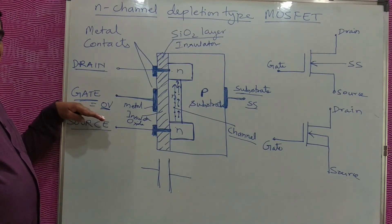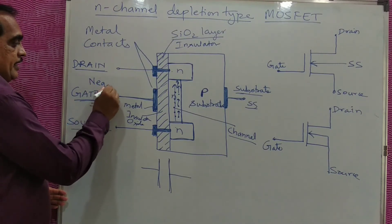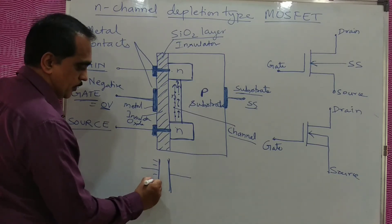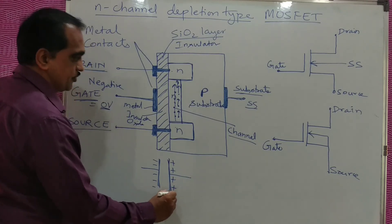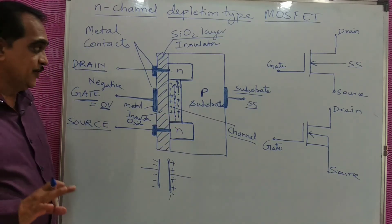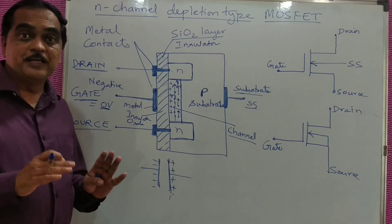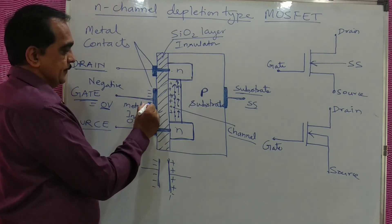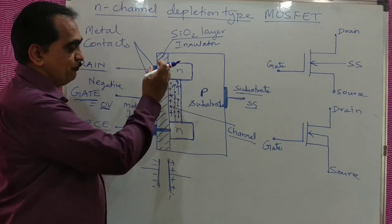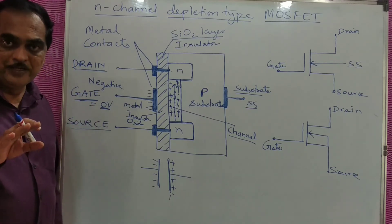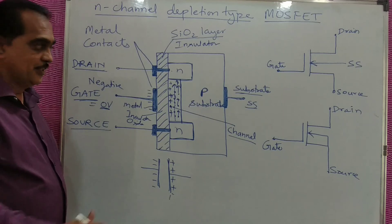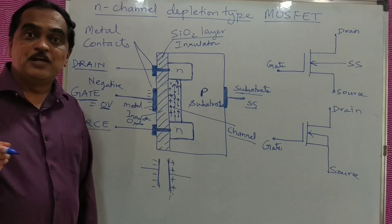Now if this gate voltage is made negative, what will happen? For a parallel plate — this is the metal plate and this is the semiconductor plate — if this side is negative, automatically the other side will have opposite polarity: positive. When this side becomes positive, the negative charge particles — electrons — are depleted. Because you are giving a negative voltage here, this side becomes positive, and the negative charge electrons flowing from source to drain will be reduced and depleted. Because of that depletion, the current flowing from source to drain will reduce. So as you increase the negative voltage, the current will decrease. This is depletion mode.